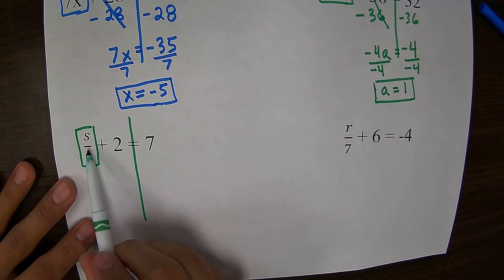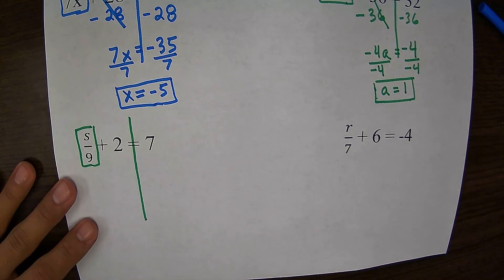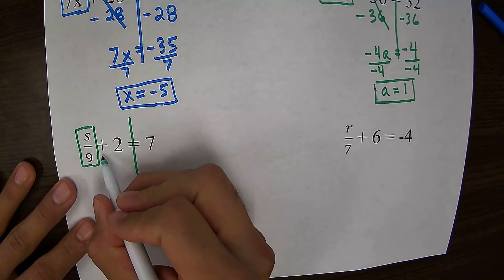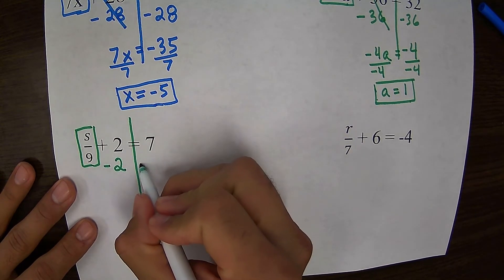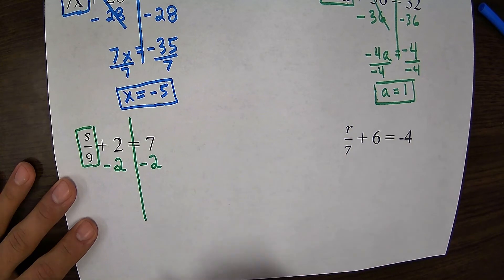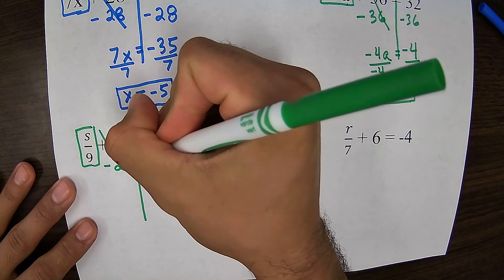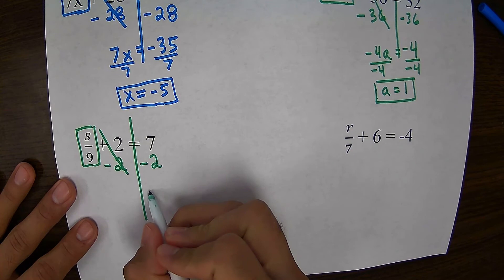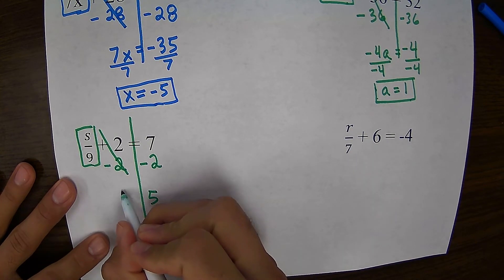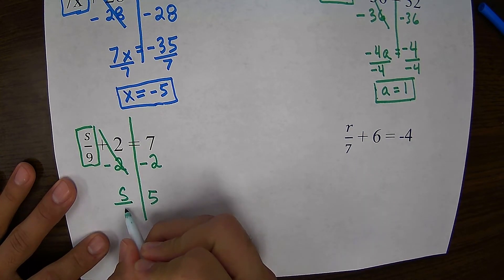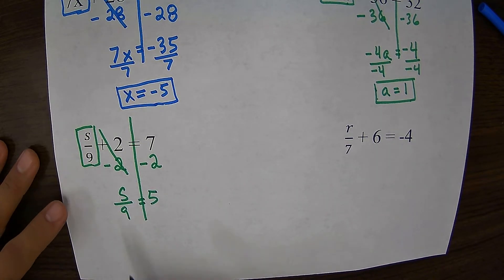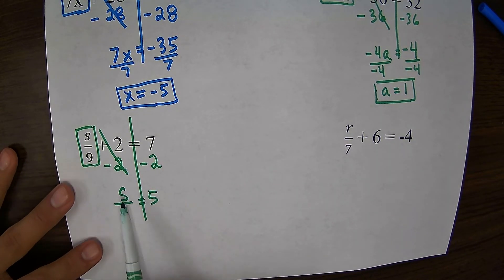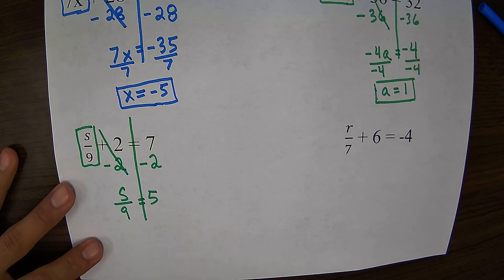We want to get this s divided by 9 by itself, so that means we need to get rid of this plus 2. To cancel out this plus 2, I'm going to subtract 2. I have to do it from both sides. So this cancels. 7 minus 2 gives me 5. I bring down my s over 9. So now I'm down to my one-step equation, s divided by 9 equals 5.